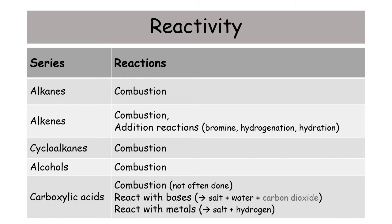Carboxylic acids are by far the most reactive. They can do combustion reactions, though it's not frequent that you actually burn carboxylic acids. The more common reactions are them reacting with bases — metal oxides, metal hydroxides, and metal carbonates to produce a salt and water, and in the case of carbonates also carbon dioxide. They can also react with reactive metals to produce a salt and hydrogen. So you can use the reactivity to tell apart particular homologous series.